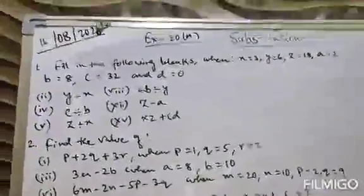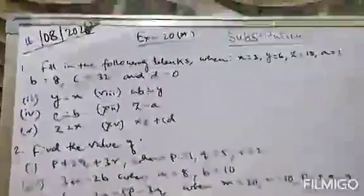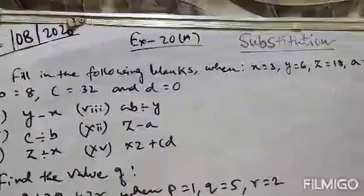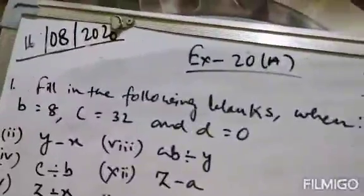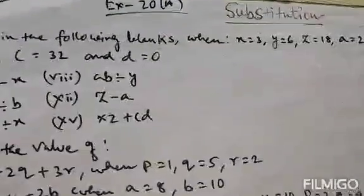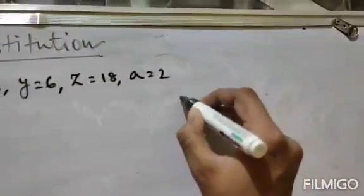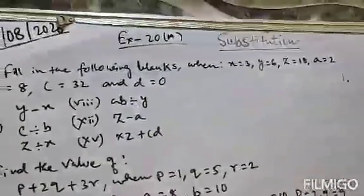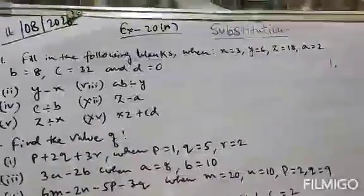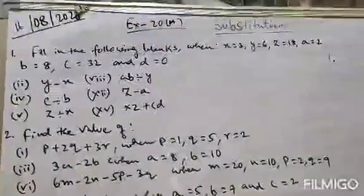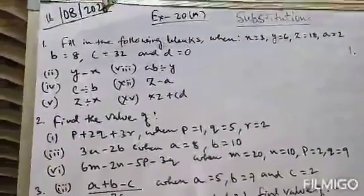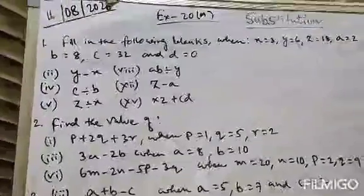Good morning students, welcome to my YouTube channel. Today we will discuss a new chapter — substitution. This is the first exercise of the chapter, Exercise 20a, and this is the first lecture. Without wasting any time, let's start. Question number 1 says: fill in the following blanks when x=3, y=6, z=18, a=2, b=8, c=32, and d=0.